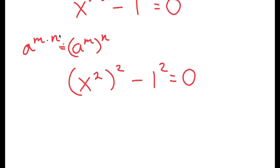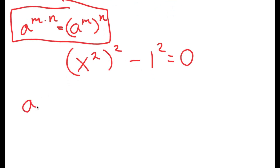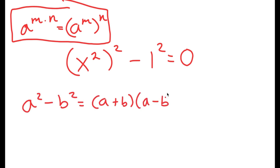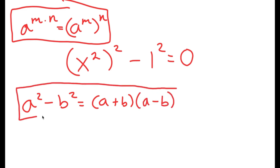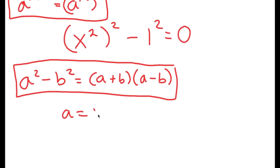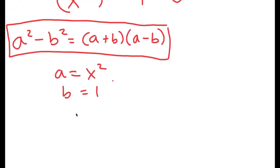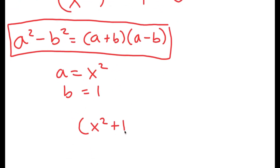Another property I can use is a squared minus b squared is equal to a plus b times a minus b. In this case, a is x squared and b is 1. So I get x squared plus 1, times x squared minus 1, is equal to 0.